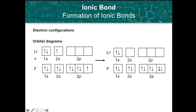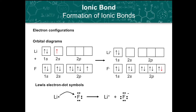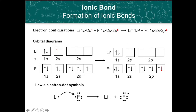The number of electrons lost by the metal should be equal to the number of electrons gained by the non-metal. We can illustrate the electron transfer in three different ways: through the electron configuration, the orbital diagram, and the Lewis electron dot symbols.